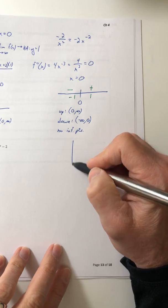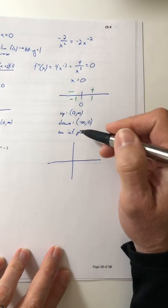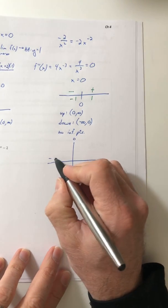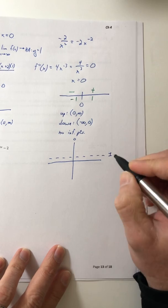Okay, so let's piece it all together. So we have a vertical asymptote at zero, a horizontal asymptote right at one.